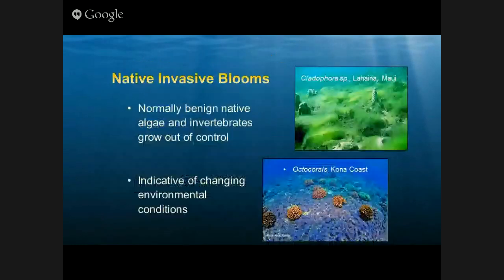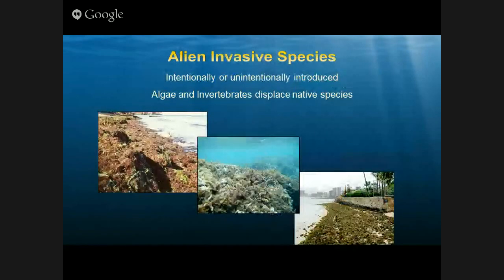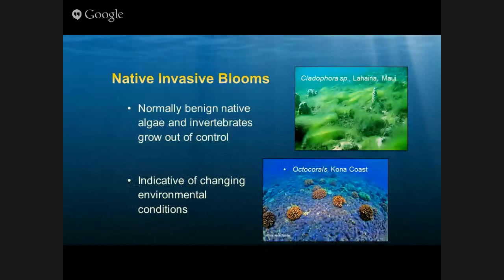We also want to keep an eye out for alien invasive species — normally algae. There are several types of algae harmful to Hawaii's reefs, and Eyes of the Reef can help you identify those and distinguish them from native algae that are okay. There are also native species blooms — organisms that are supposed to be in Hawaii, but when they suddenly grow to really high density, it can be a problem for corals and is usually indicative of a change in the environment.